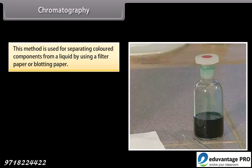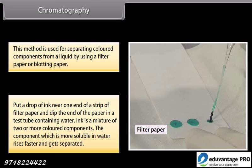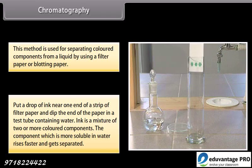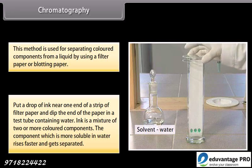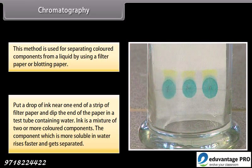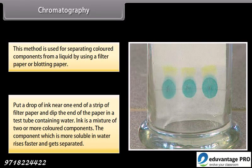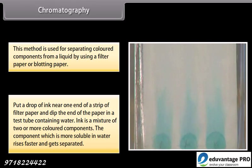Chromatography: This method is used for separating colored components from a liquid by using a filter paper or blotting paper. Put a drop of ink near one end of a strip of filter paper and dip the end of the paper in a test tube containing water. Ink is a mixture of two or more colored components. The component which is more soluble in water rises faster and gets separated.